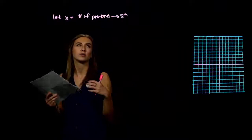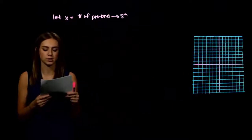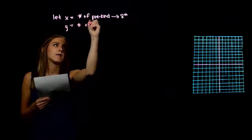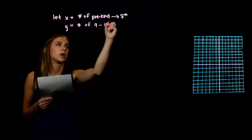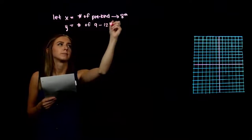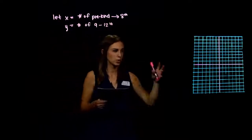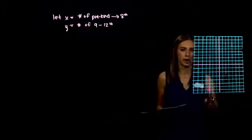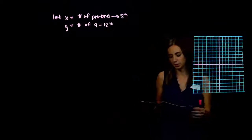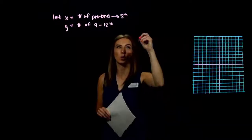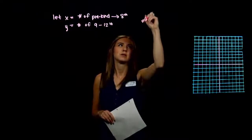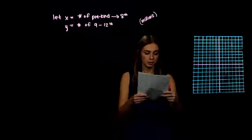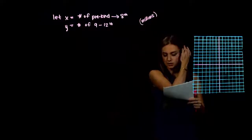Let y be the number of 9th through 12th grade students. So x represents kindergarten through 8th grade, y represents high schoolers, and these are reported in millions — it's important to know the units.